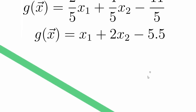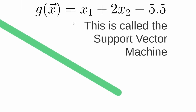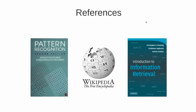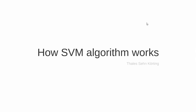Substituting the values of Omega (2/5 and 4/5) and Omega_0, we obtain the final equation that defines this green hyperplane: X1 plus 2 times X2 minus 5.5. This hyperplane classifies the elements using Support Vector Machines. These are some references I have used. So this is how the SVM algorithm works.